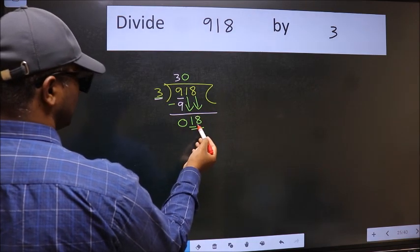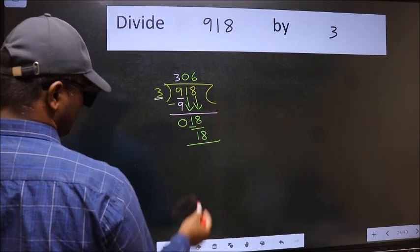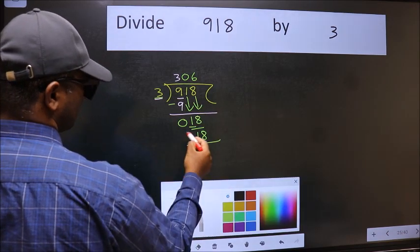Now 18. When do we get 18 in the 3 table? 3 times 6 is 18. Now we should subtract. We get 0.